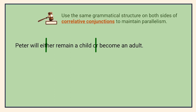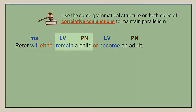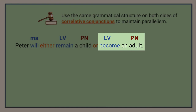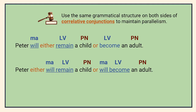In this case, the modal 'will' is in front of the correlative conjunction 'either.' The pattern after the first conjunction, therefore, is linking verb and predicate nominative. The same pattern follows the second conjunction in the pair, so this sentence is parallel. Notice what happens when the modal auxiliary is placed in a different spot. Now the modal and main verb follow the first conjunction, so we have to repeat the modal after the second one to maintain parallelism.